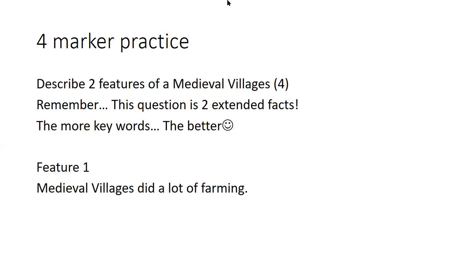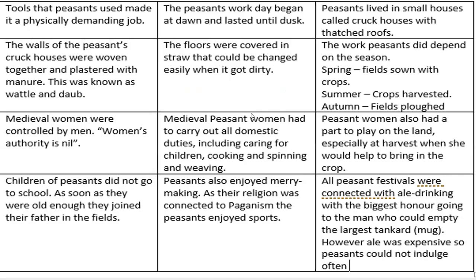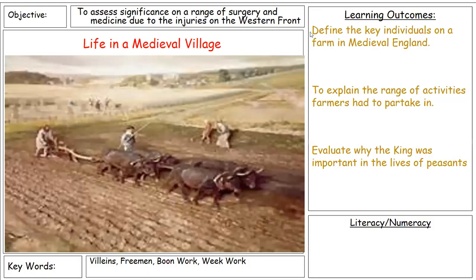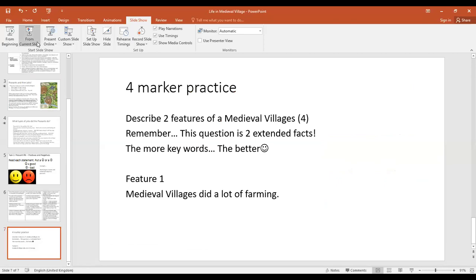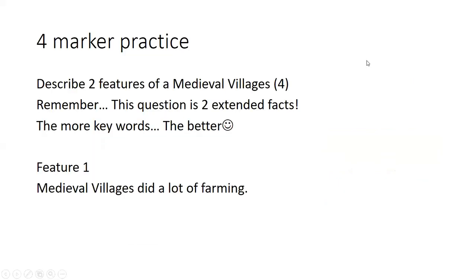Remember, two features are extended facts that actually mean something. If there's a practice question, give it a go — you should be able to identify if you've got all four marks yourself. Go back through this video, then mark your own answer and see if you get four out of four. Going back to the beginning: we've identified the practice of medieval village life, we've got the key individuals, looked at the activities, and looked at why the king was important in the life of peasants because the king's feudal system very much develops this concept. Key words: week work is the normal work that the peasants do, and boon work is the extra work done during times of harvest.